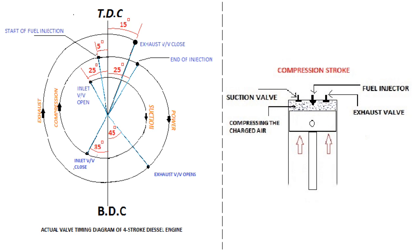Compression Stroke: In the compression stroke, both inlet and exhaust valves close and the piston travels from bottom dead center to top dead center. Once the piston reaches about 5 degrees before top dead center, fuel injection commences. This angle may depend on the manufacturer. There is always an ignition delay, which is why fuel injection starts before top dead center.